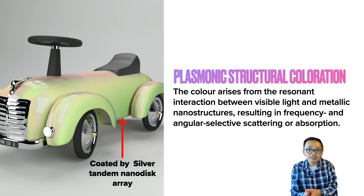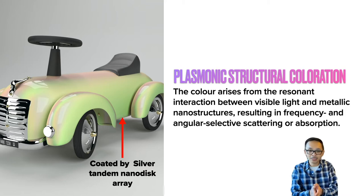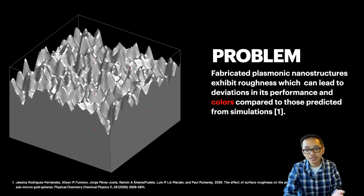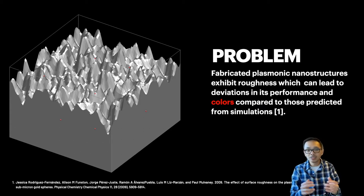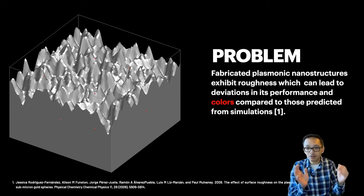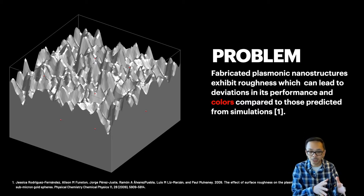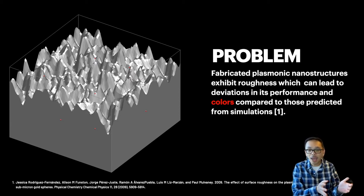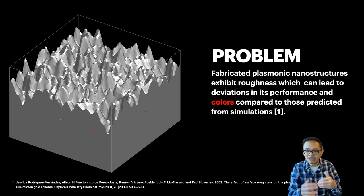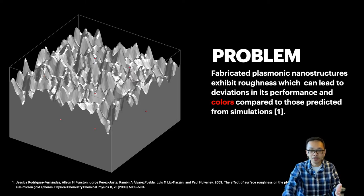For this work, we focus on plasmonic structural coloration, where color arises from the resonant interaction between metallic nanostructures and light, producing iridescent colors. There is a problem, however: most fabricated samples are not perfectly smooth — there is roughness. We assume there is nanoscale roughness on the plasmonic nanostructures, which creates performance differences in fabricated samples and color differences from what we expect from smooth plasmonic nanostructures.